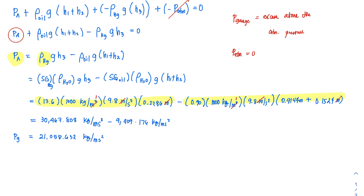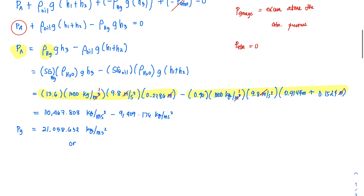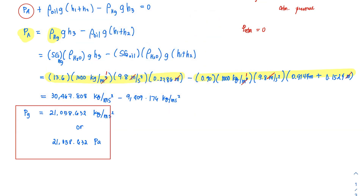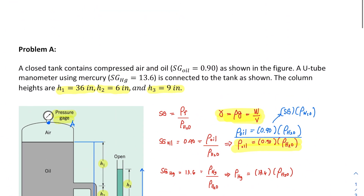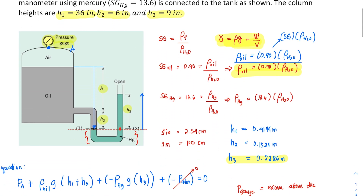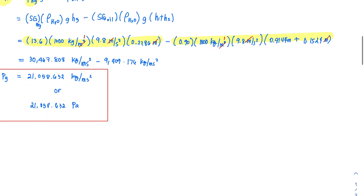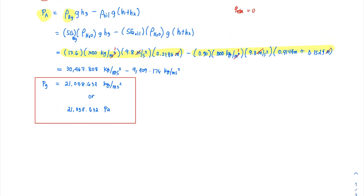You might wonder why we're getting kg/(m·s²) instead of pascals — but this is actually just pascal in another form. So our answer is 210,058.632 pascals. This is the gauge pressure at the portion of the system containing the compressed air and oil tank.